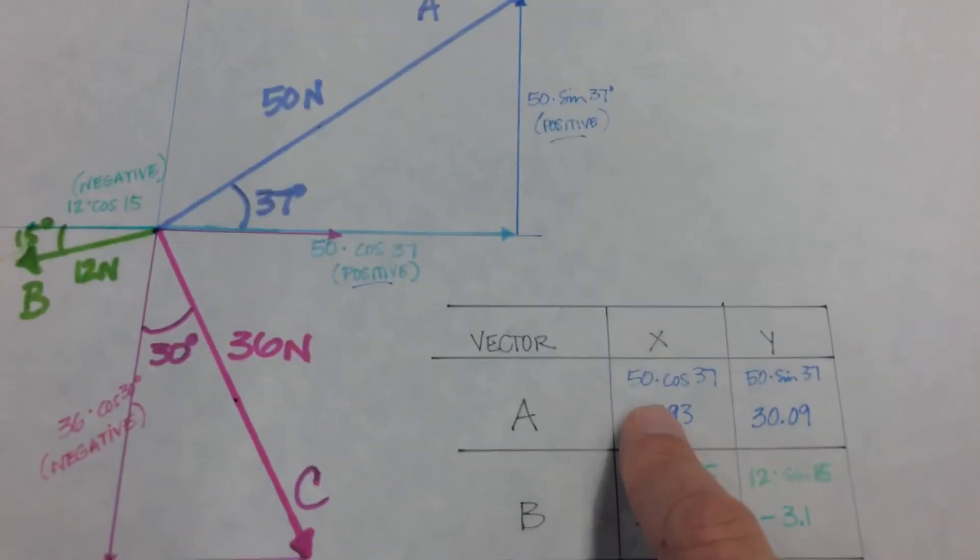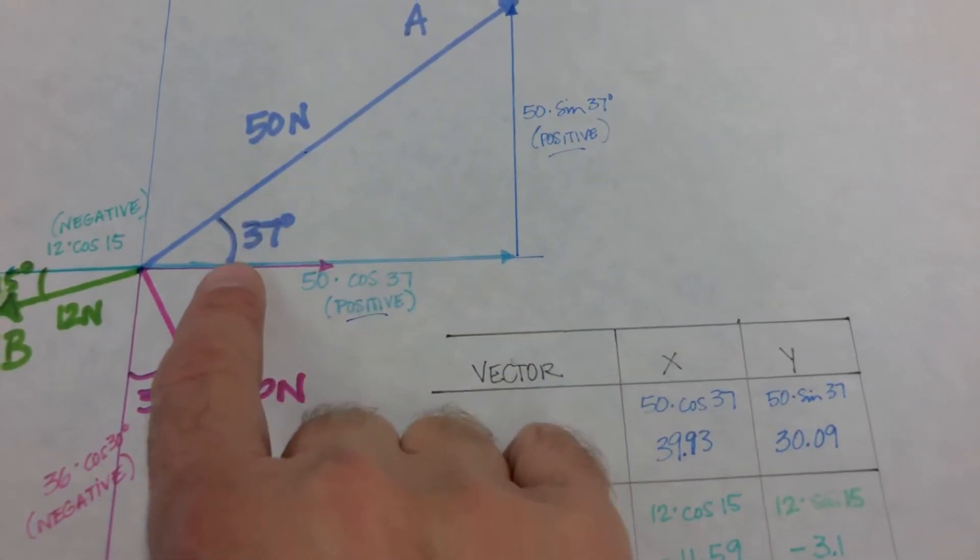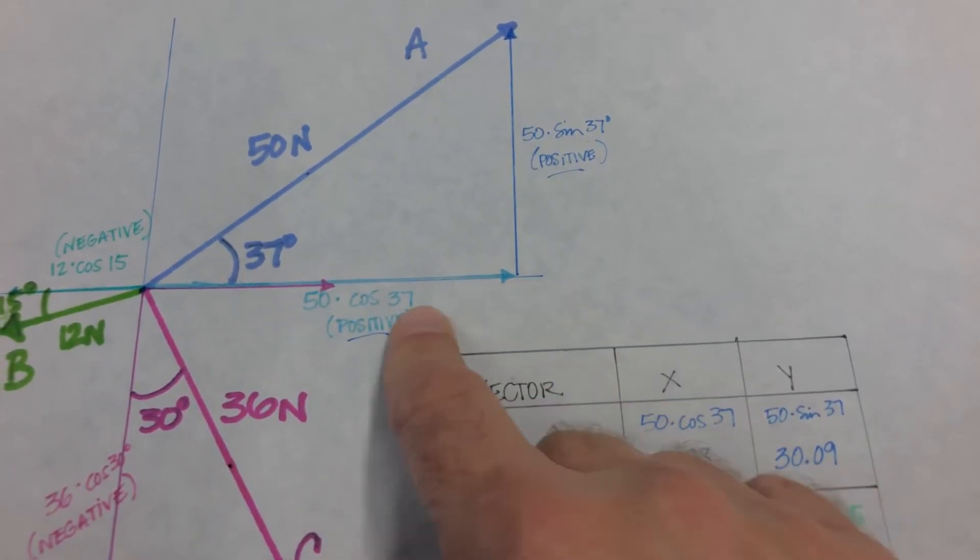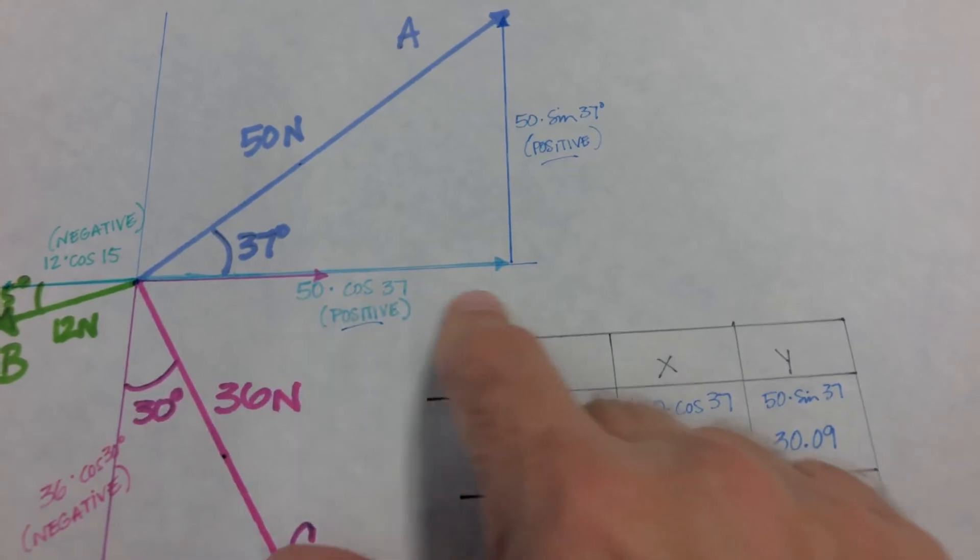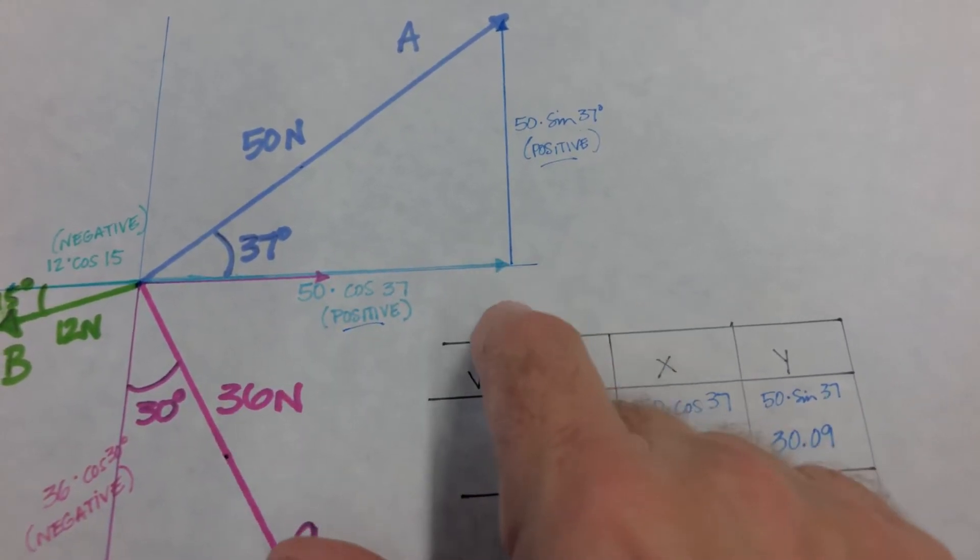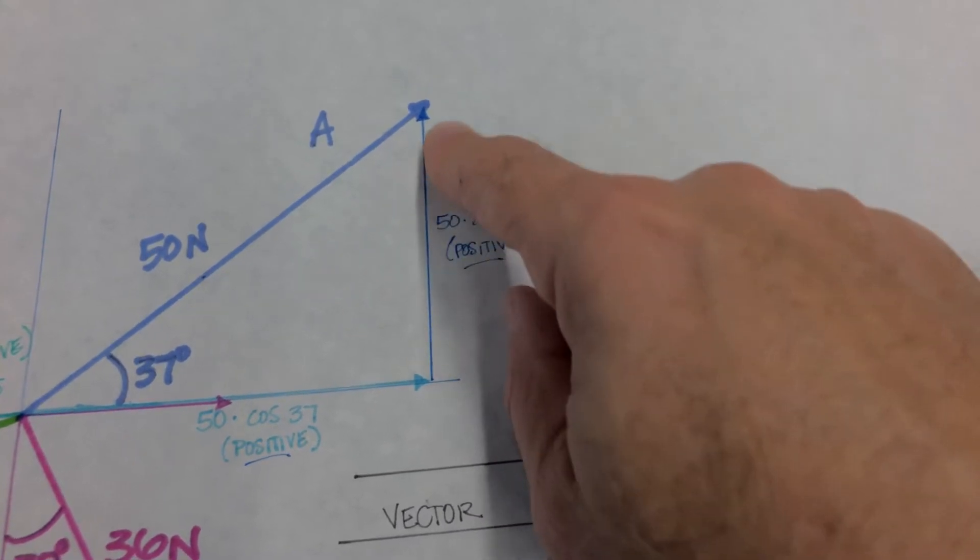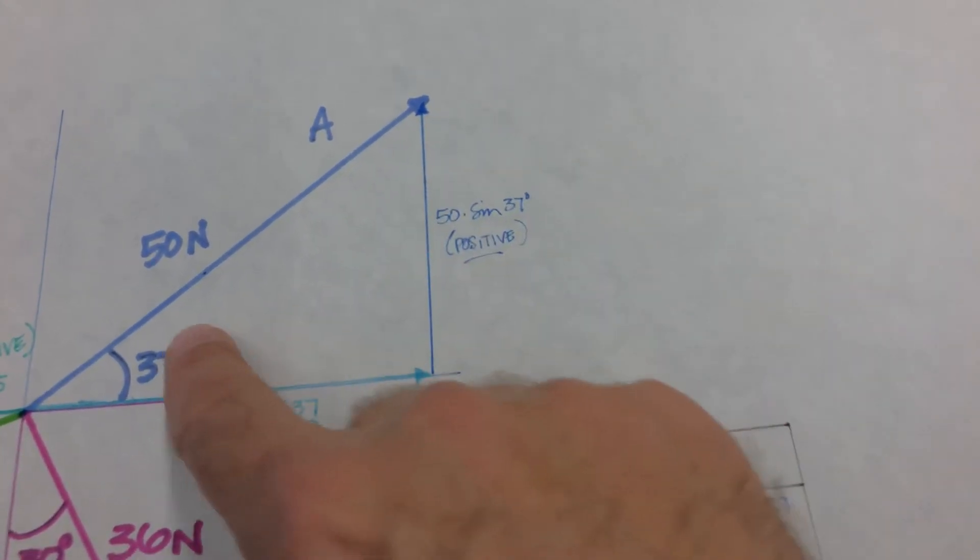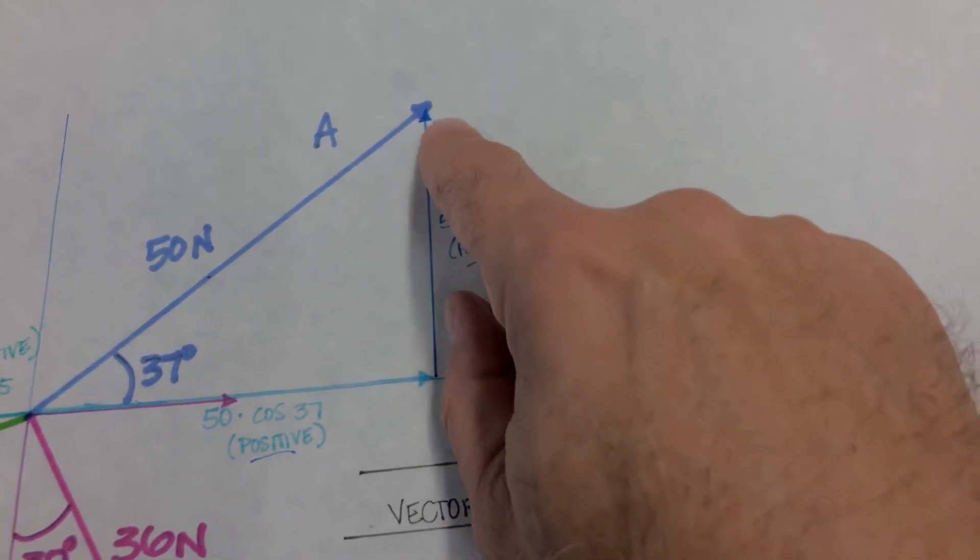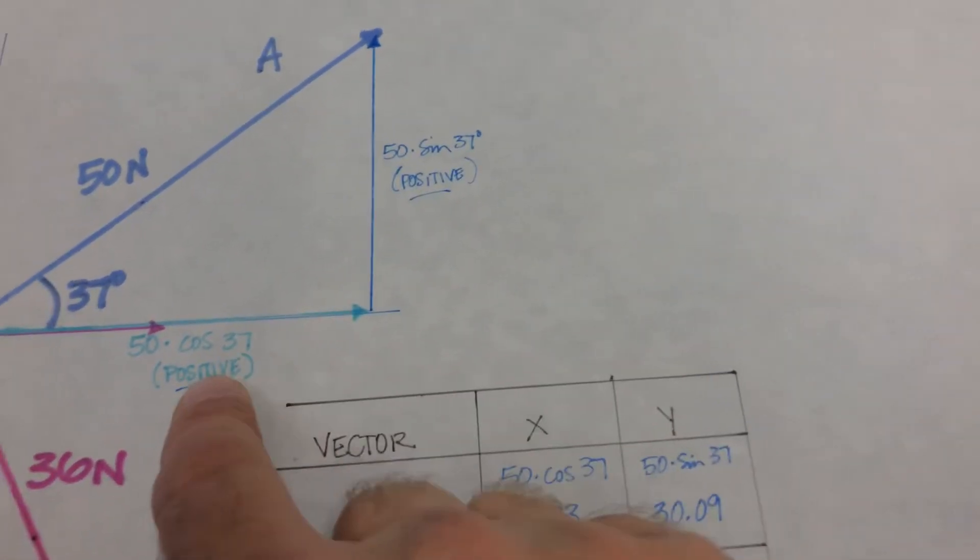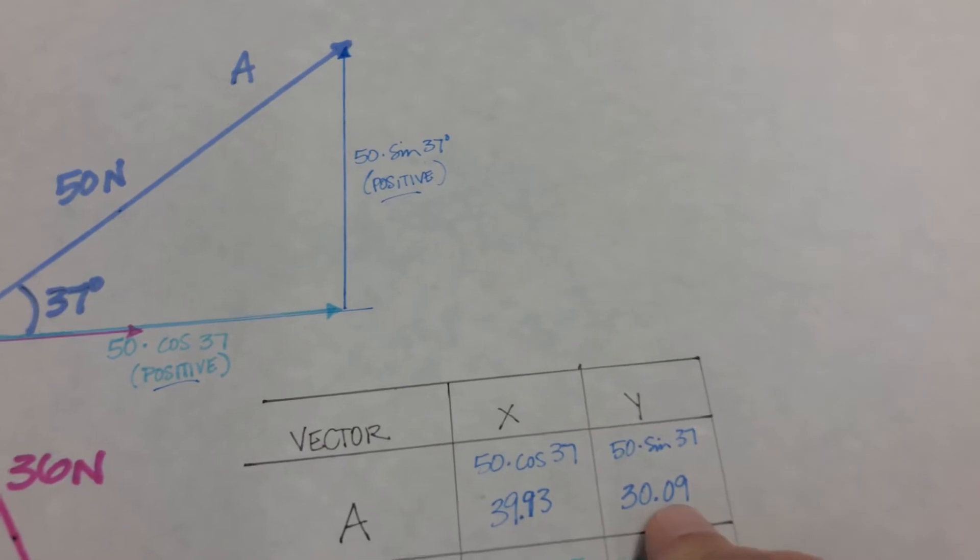So the X component for A is 50 times cosine 37, because it's the adjacent side, and that happens to be for X positive direction because it's in the first quadrant. The Y component is 50 times sine 37, which is the opposite side from the angle, and it's also in the first component, so that makes Y positive. So it's positive X, positive Y.